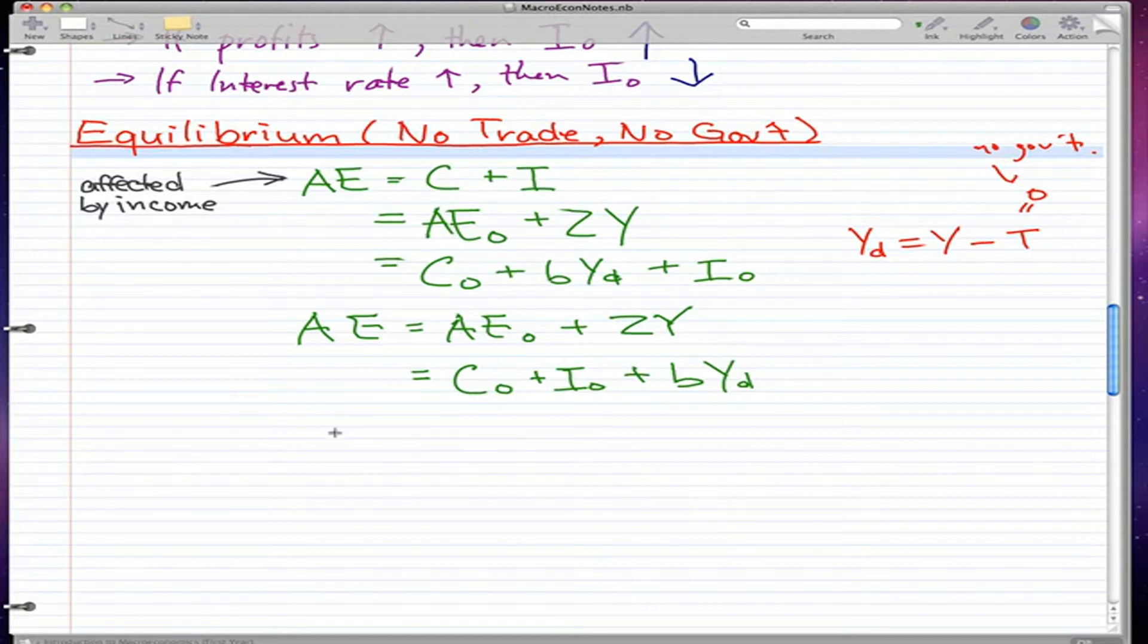I'm sure you can see that these two formulas can actually parallel each other. What I mean by that is that AE₀ is essentially equal to C₀ plus I₀ in this situation. And Z, our fraction of income, is essentially our marginal propensity to consume.